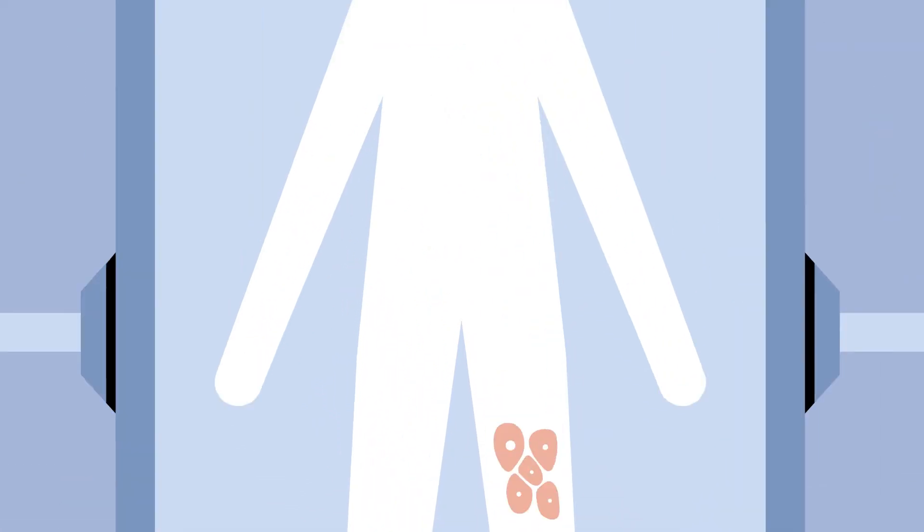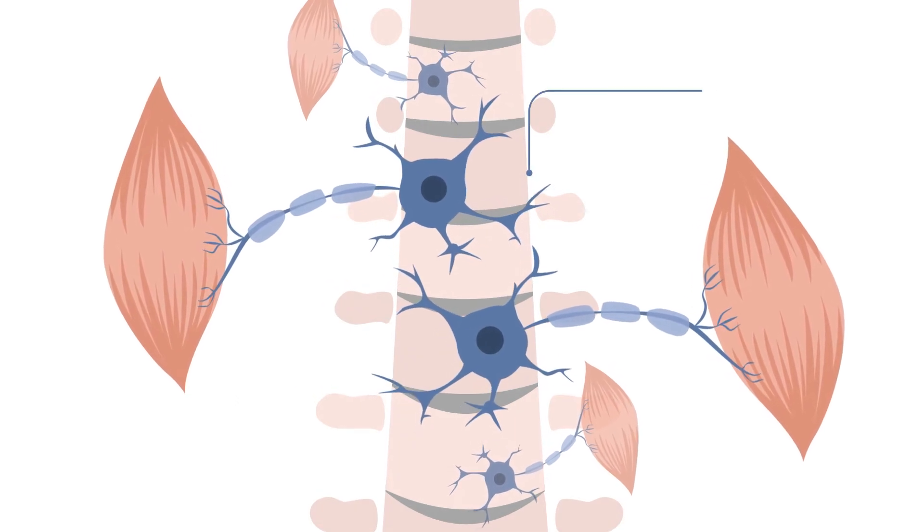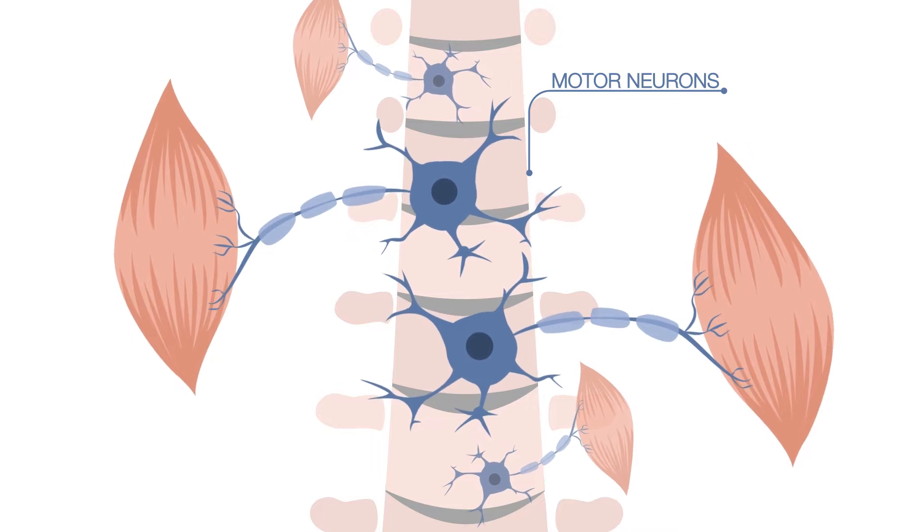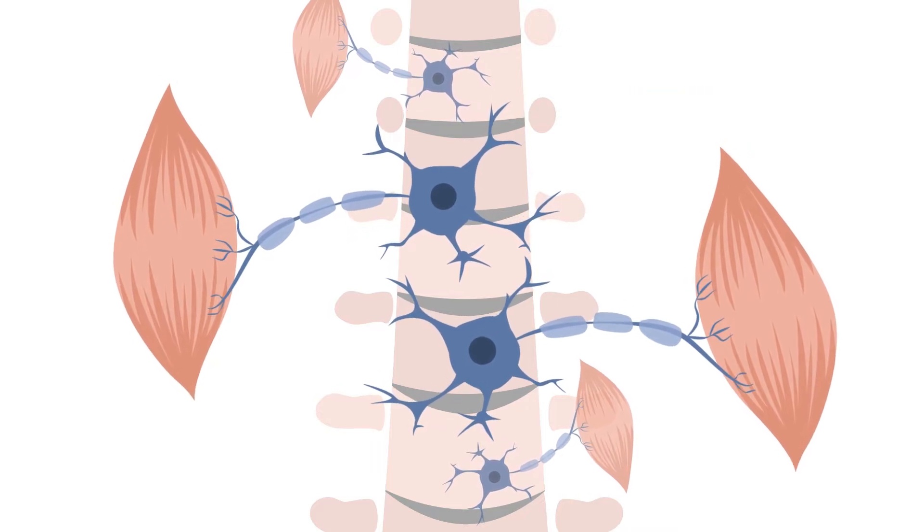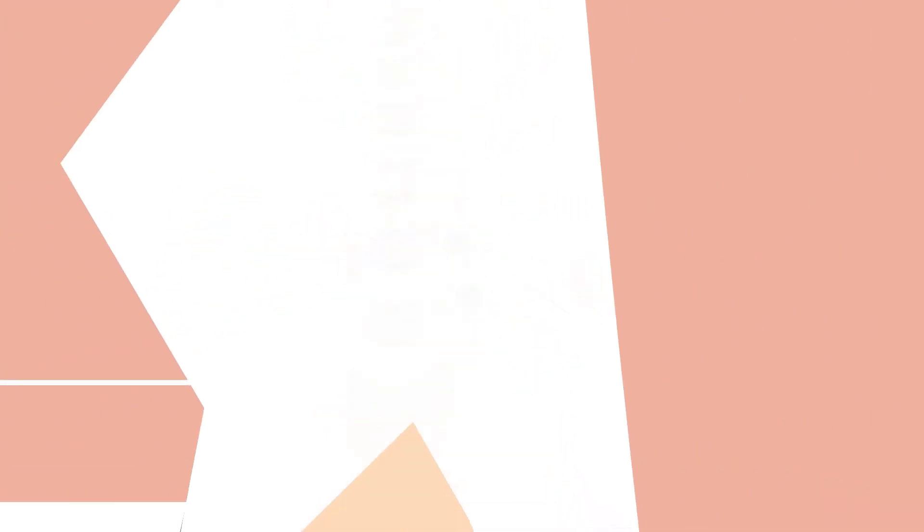ALS is a neurodegenerative disorder. It affects nerve cells in the brain and spinal cord called motor neurons, which are specialized to control our muscles. The motor neurons lose their connection to the muscles and die, causing patients to become progressively paralyzed.